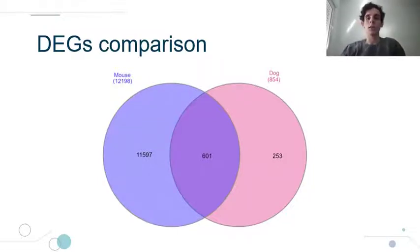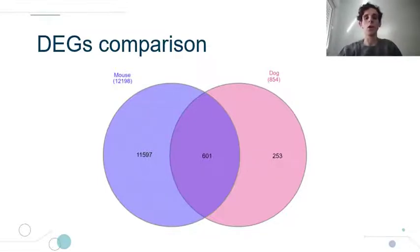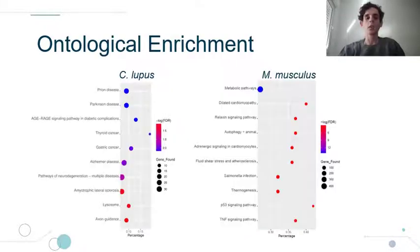Of these, 601 genes were present in both datasets, which comprises around 70% of the DEGs in dog.